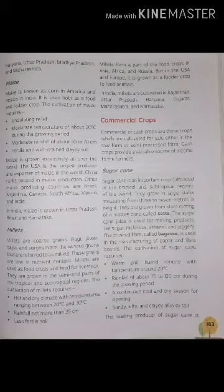The cultivation of sugarcane requires warm and humid climate with temperature around 20 degrees Celsius, rainfall of about 75 to 120 centimeters — and if rainfall is insufficient, farmers provide irrigation — and a continuous cool and dry season for ripening.